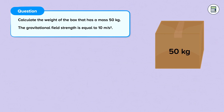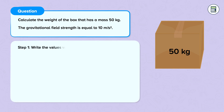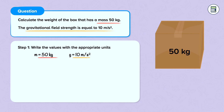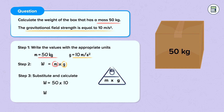Let's apply the formula. Calculate the weight of the box that has a mass of 50 kg. The gravitational field strength is equal to 10 meters per second squared. Step 1: we write the values with the appropriate units — mass is equal to 50 kg, gravitational field strength is equal to 10 meters per second squared. Step 2: we write our formula — W is equal to m times g. Step 3: we substitute and calculate — W is equal to 50 times 10, which is equal to 500 newtons.